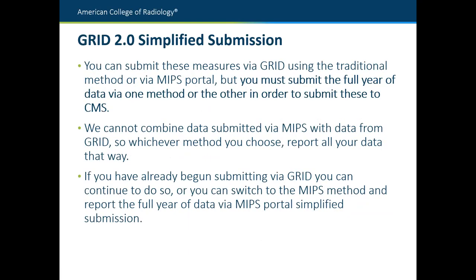Whichever method you want to report these measures with — via GRID using the traditional template or via the MIPS portal using the simplified template — you have to choose one and report the full year via that method. You can report both ways if you want to, but because we're not able to combine data submitted to GRID with data submitted to MIPS, you have to submit everything via one method to get credit. If you do want to switch to the simplified MIPS method, make sure you go back and retrospectively submit all of your data from the entire year starting with January 1st.